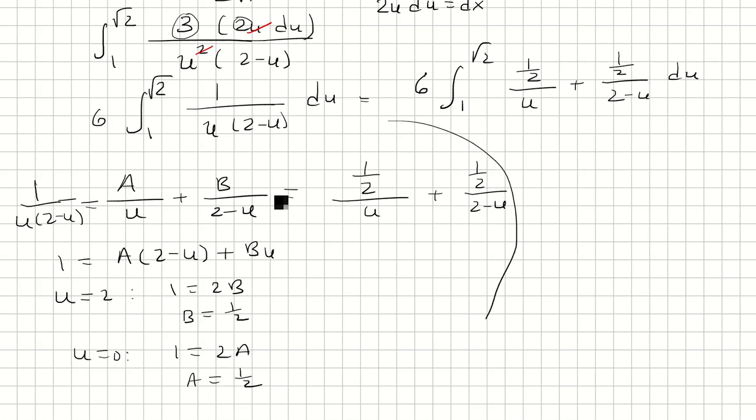And now I can integrate this. So I'll pull out the 6. The anti-derivative of 1 half over u is just 1 half ln absolute value of u. And for this one, you can choose to do a substitution, but if you want, you can say v is 2 minus u. dv is negative du. So that means du is negative dv. But basically what happens is this is just negative 1 half ln absolute value of 2 minus u.